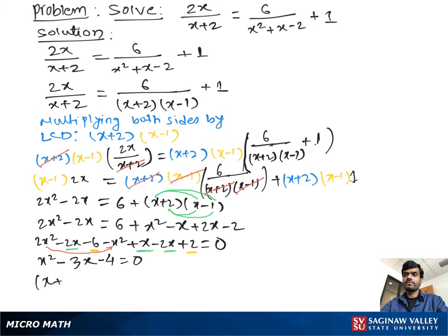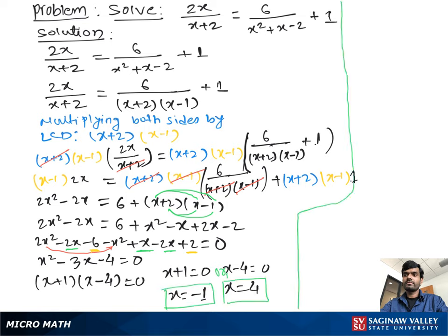Then we factor, which gives x plus 1 times x minus 4 is equal to 0. We set x plus 1 equal to 0, or x minus 4 equal to 0, giving x is equal to negative 1, or x is equal to 4. Now let's check which solution is correct.